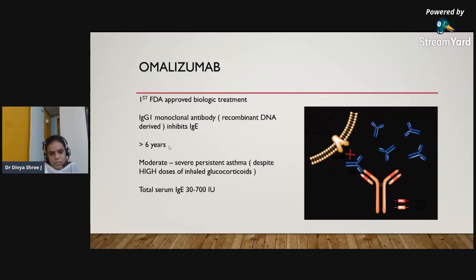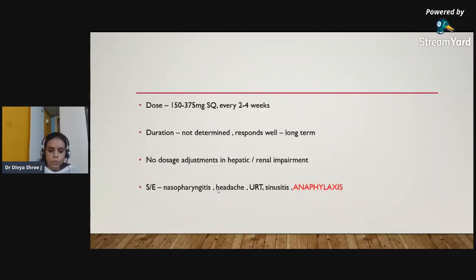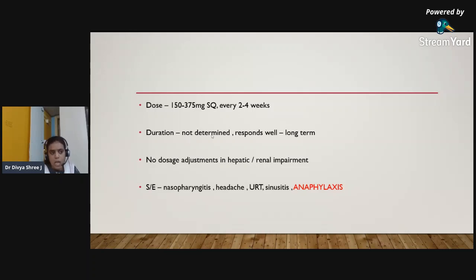Omalizumab is used in patients more than six years of age with moderate to severe persistent asthma despite high doses of inhaled corticosteroids. A total serum IgE of at least 30 to 700 international units is required before starting. The dose is 150–375 mg administered subcutaneously every two to four weeks. Duration of treatment is not determined; if the patient responds well, it can be used long-term. There are no dose adjustments needed for hepatic or renal impairment.